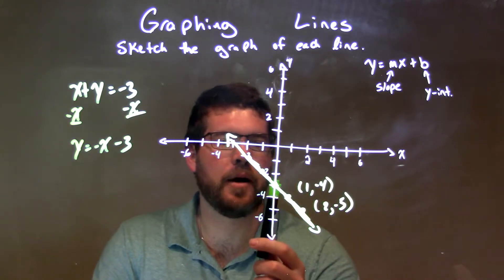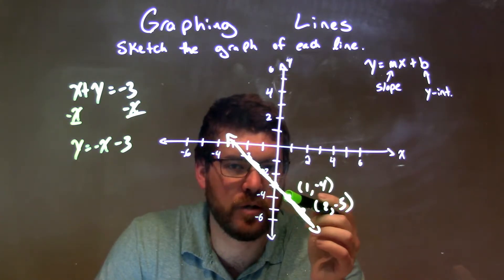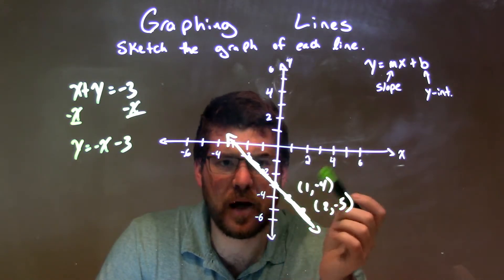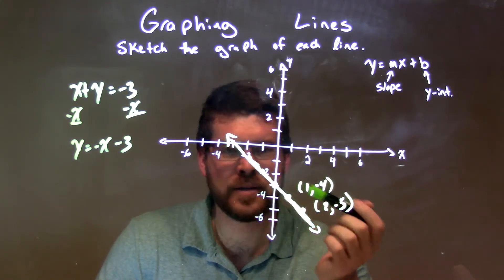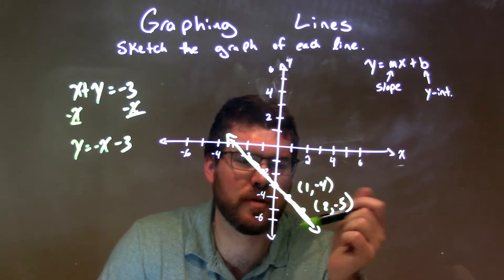Negative 3 was our y-intercept, point right there, and our slope was negative 1. Down 1, over 1 to the right, down 1, over 1 to the right. It's the same thing as up 1 to the left 1, up 1 to the left 1. Sometimes it's nice to do that to get to both sides.